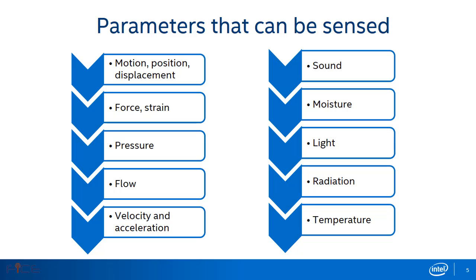Different physical parameters can be sensed using sensors, some of which are shown in this slide. Sensors used for detecting the speed of an object or vehicle are called speed sensors. Similarly, a pressure sensor is a device used for pressure measurement of gases or liquids. Flow sensors are used to measure the flow rate, often for a liquid, and are usually part of a flow meter. Temperature is one of the most commonly measured environmental variables. We can also use sensors to measure other parameters like sound, moisture, light, radiation, and so on.